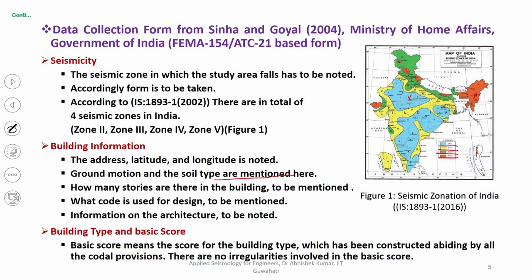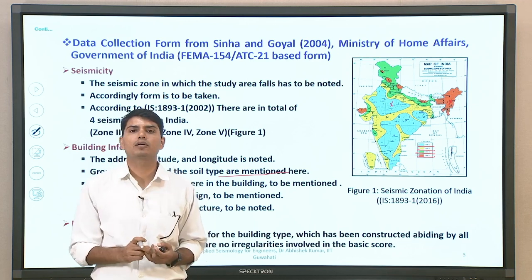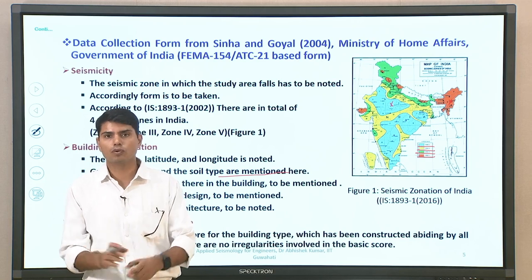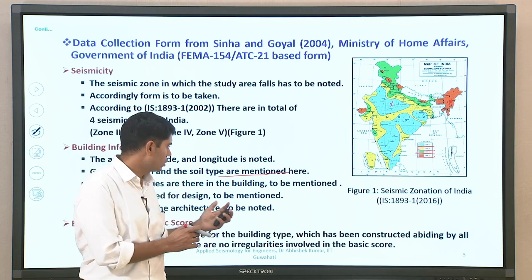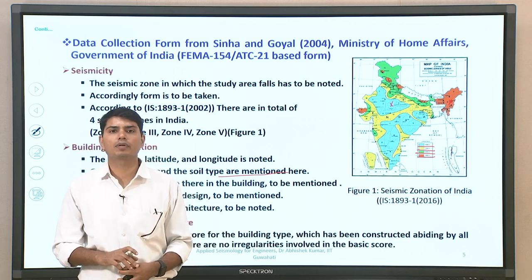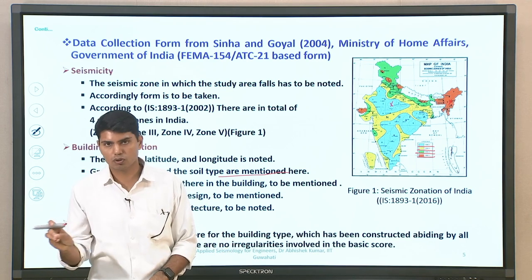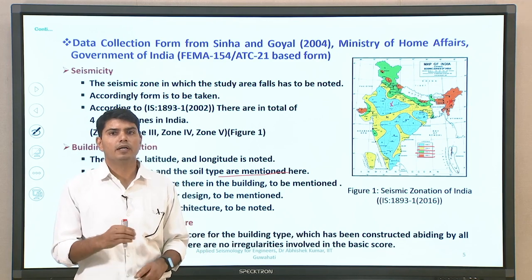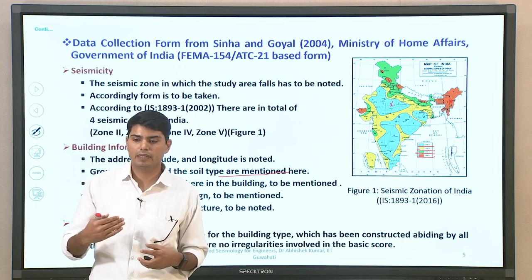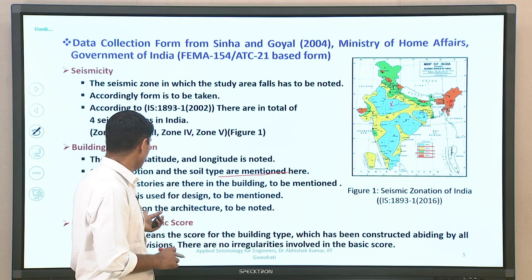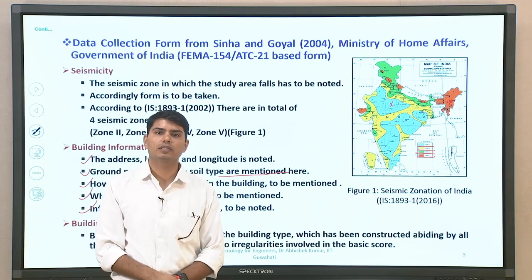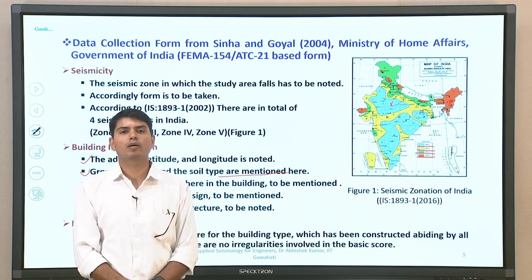You have the building information, seismicity information, and ground motion information the building is likely to be exposed to. You should also note which code was used to design the building. Architectural details must be reported, primarily to account for irregularity — whether in terms of plan or elevation. These are the key pieces of information corresponding to building type that must be taken into consideration for vulnerability assessment data collection.